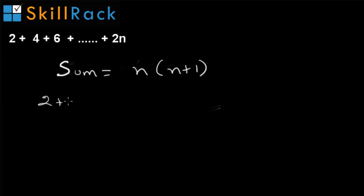Let's take an example. We have 2 plus 4 plus 6 plus 8 plus 10. Now 10 can be written as 2 into 5, so n is equal to 5 in this example.